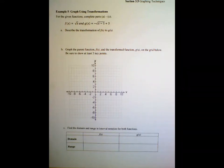This is section 3.5 on transformations for graphing functions, and we're now on example five. For the given functions complete parts A through C. We're to describe the transformation from the parent function f of x, the square root function, to the g of x given here. We're to graph both of those on the grid showing points, and finally tell the domain of both functions.